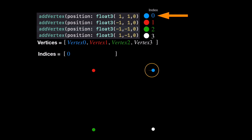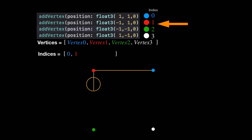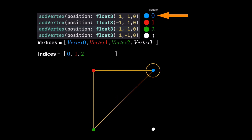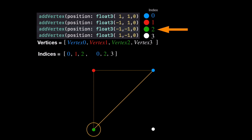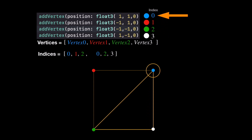We're going to send along this vertex buffer — vertices zero, one, two, and three — and use indices to tell the GPU which vertices to use for each triangle. We start with index zero, add one, add two — the GPU says you've given me a triangle, I'm going to draw it. For the second triangle we start back at zero, skip to two, then go to three — and we have our quad.